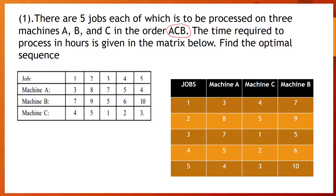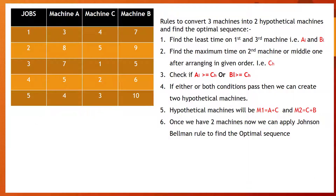Here you can see the table given in the question paper. The first thing we need to do is sort the machines and timings in the given order, that is A, C, B. I have done that here. So jobs 1, 2, 3, 4, 5 with machine A, machine C, and machine B. We cannot directly go for the sequence because here we have three machines. We need to find the optimal sequence before finding the total elapsed time, and for that we need to convert these three machines into two hypothetical machines.